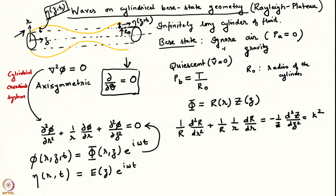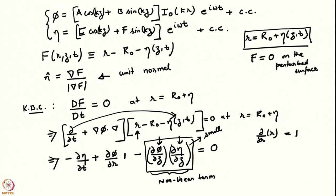We were looking at waves on a cylindrical base state geometry, where this was a fluid cylinder in the base state — quiescent fluid with a pressure jump inside compared to outside due to surface tension. We had ignored gravity and we were looking at surface perturbations on the cylinder. We had solved the Laplace equation and found a modified Bessel function, expressing the r and z dependence of the perturbation velocity potential and the surface perturbation in terms of the modified Bessel function.